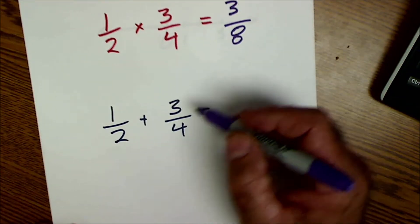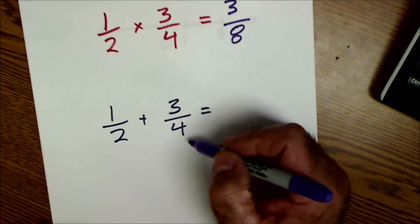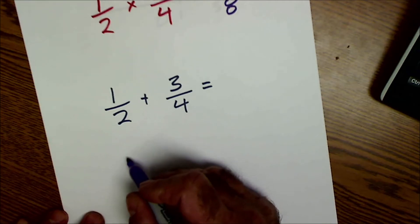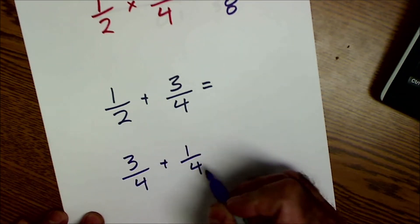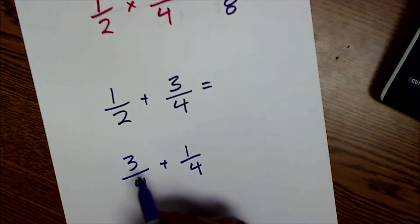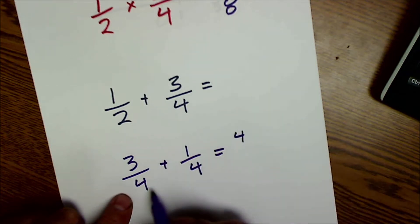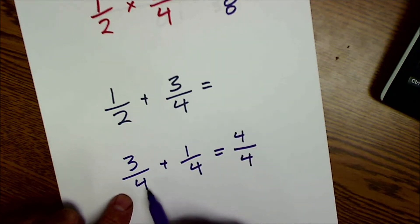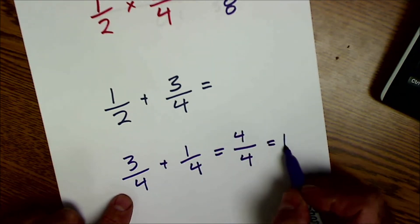The way you add fractions is the bottom number — the denominator — has to be the same. For example, three fourths plus one fourth: the bottom numbers are already the same, so I add across the top to get three plus one is four, and I keep the bottom number four. That makes sense: three quarters plus one quarter is four quarters, which equals one.